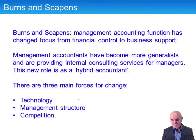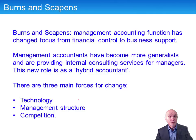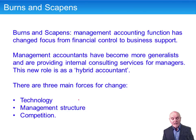Before we look a little bit more at the strategic planning process, we should mention Burns and Scarpins. There has been one question in the past dealing with these writers. The main point was that the function of the management accountant has now expanded considerably. It used to be that the management accountant would record costs, do variance analyses, and produce operating statements. Now the management accountant has much more to do with helping management plan for the future. It's very much moved from financial control to business support.